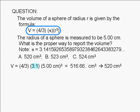If we plug in 3.1 for pi, it would be less precise than 5.00 centimeters, so we would need to round off our answer to two significant digits, and the answer would be 520 cubic centimeters.